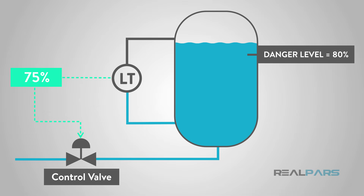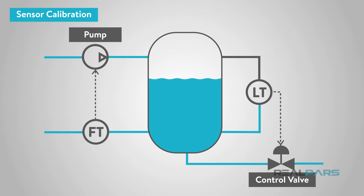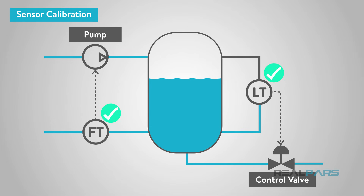If the calibration is too far from the accurate process conditions, process safety may be jeopardized. I need every instrument to have a proper calibration. Proper calibration will yield accurate measurements, which in turn makes good control of the process possible. When good control is realized, then the process has the best chance of running efficiently and safely.